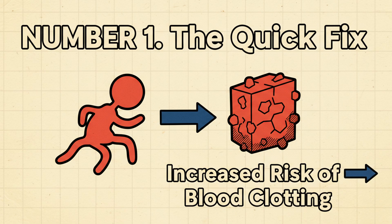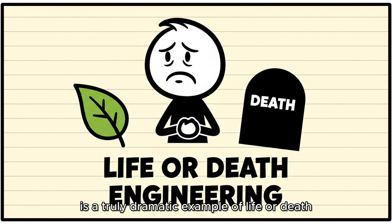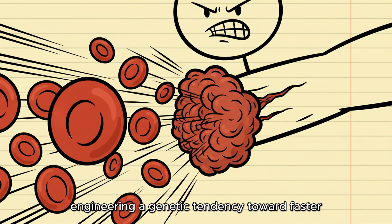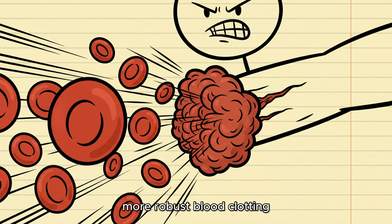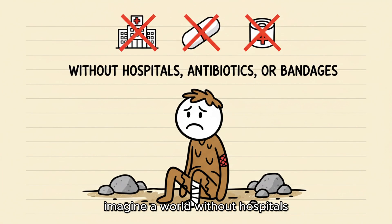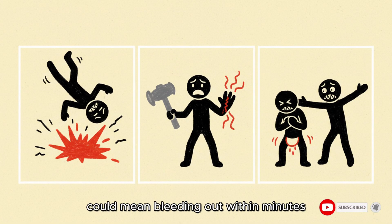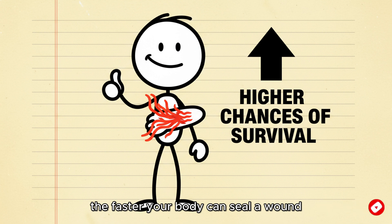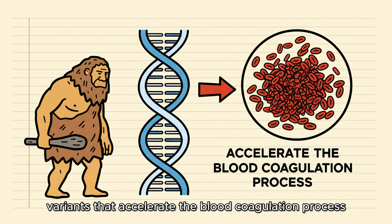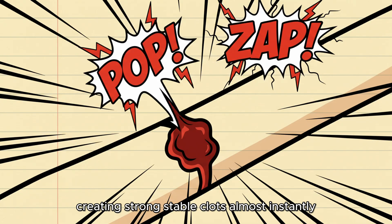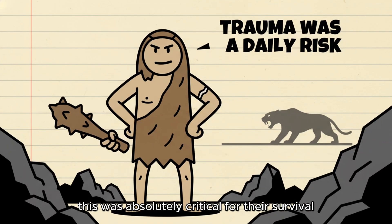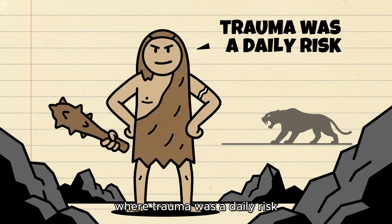Number one. The quick fix, Increased risk of blood clotting. Our final trait is a truly dramatic example of life-or-death engineering, a genetic tendency toward faster, more robust blood clotting. Imagine a world without hospitals, antibiotics, or bandages. A fall, a cut from a tool, or even childbirth could mean bleeding out within minutes. The faster your body can seal a wound, the higher your chances of survival. Neanderthals carry gene variants that accelerate the blood coagulation process, creating strong, stable clots almost instantly. This was absolutely critical for their survival in a dangerous environment where trauma was a daily risk.